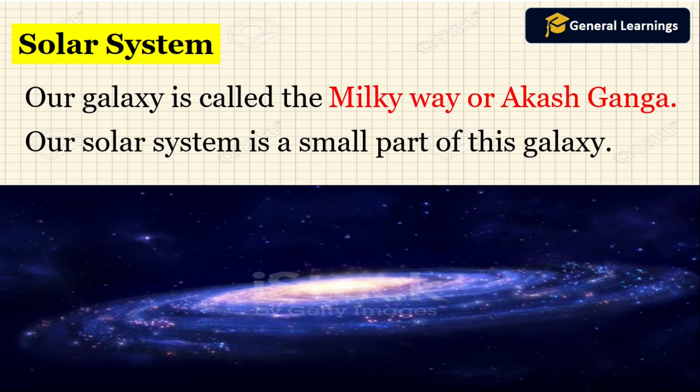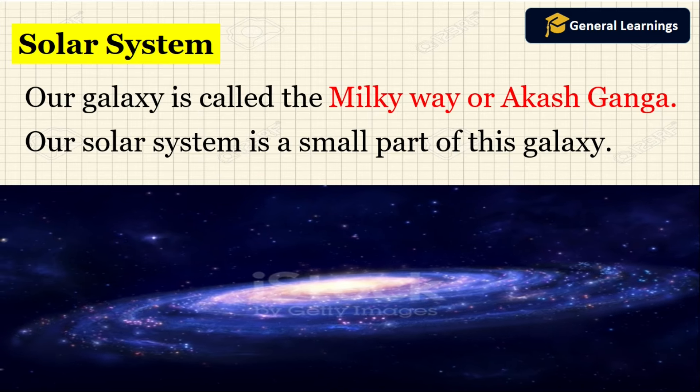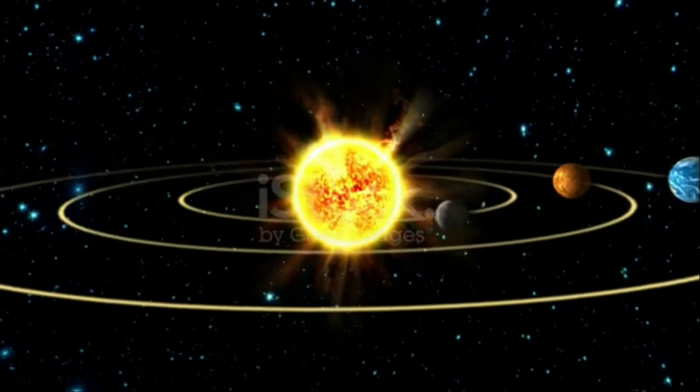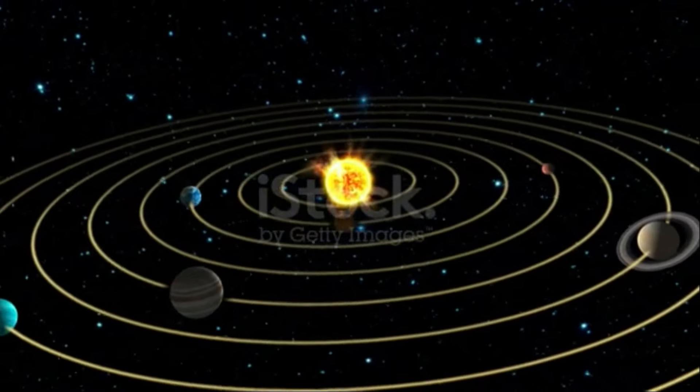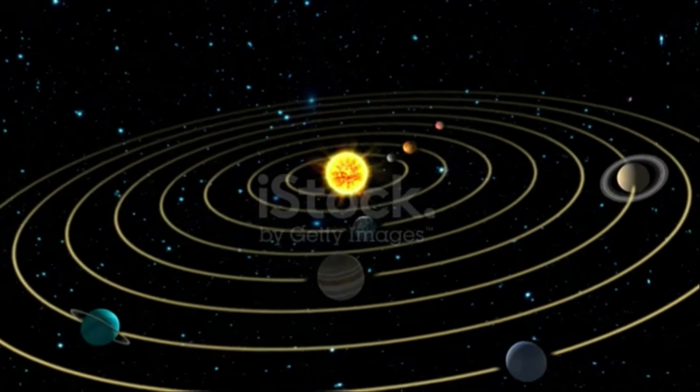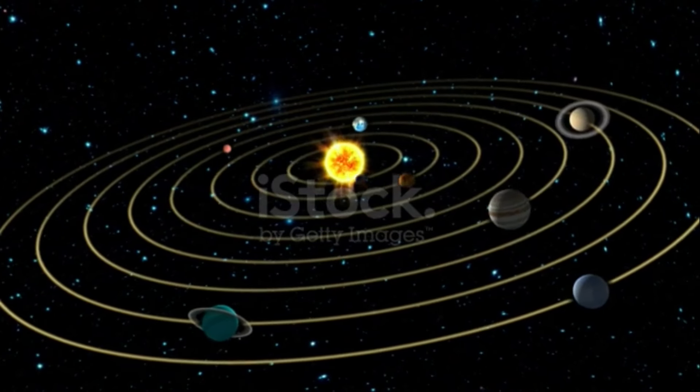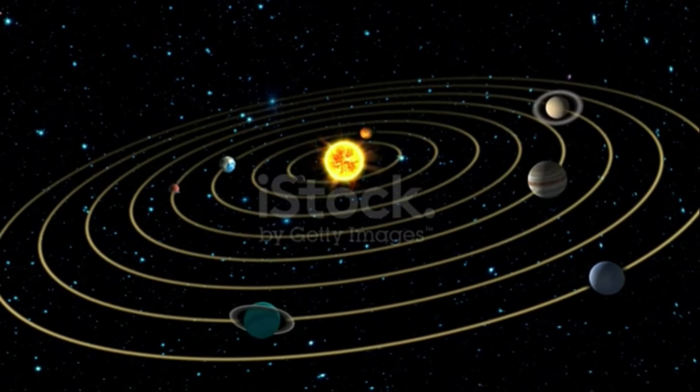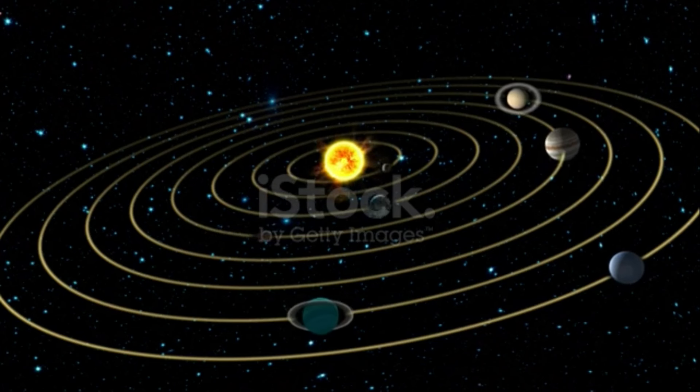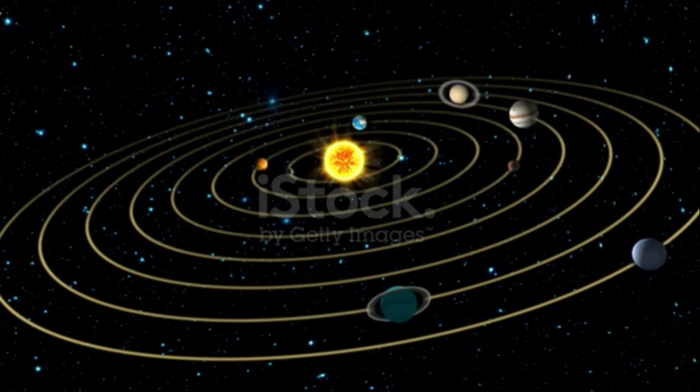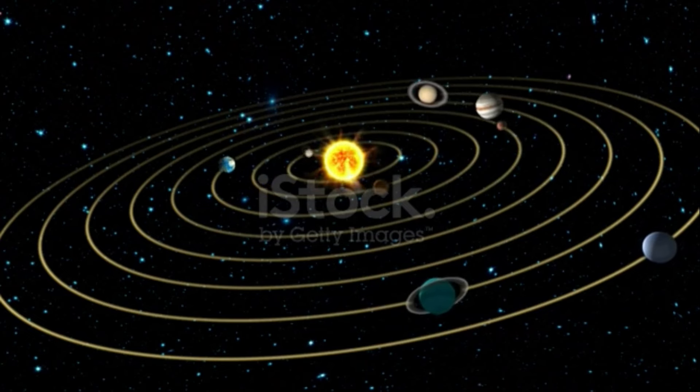Our solar system is a small part of its galaxy. It consists of sun and the eight planets. The sun lies at the center of the solar system. The eight planets of the solar system are Mercury, Venus, Earth, Mars, Jupiter, Saturn, Uranus and Neptune.